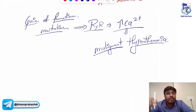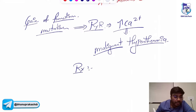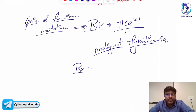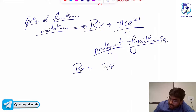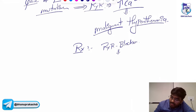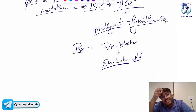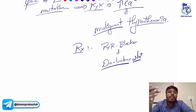That disease is called malignant hyperthermia — there is a gain of function mutation for the RYR channels. The treatment: you need to close the RYR channels using an RYR/ryanodine receptor blocker. The drug is called dantrolene sodium, which blocks the RYR channels to treat malignant hyperthermia.